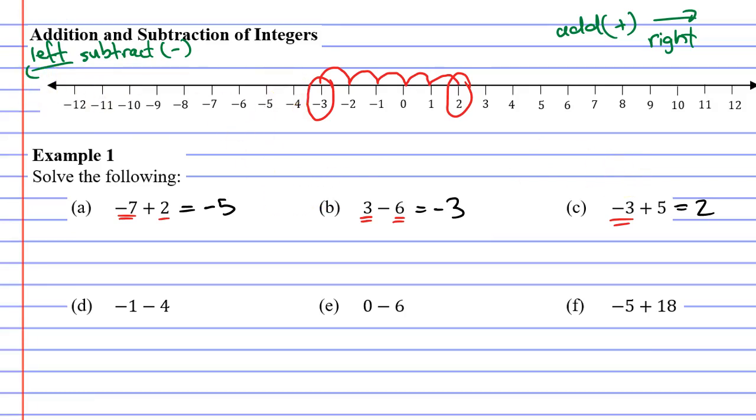Moving now on to question D. This time we're starting on negative 1, so we're going to circle that negative 1 there. We are subtracting, meaning we're moving to the left 4 times: 1, 2, 3, 4, and landing on negative 5.